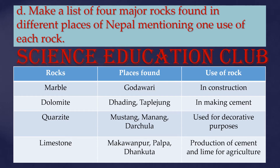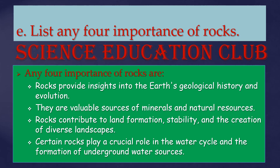Marble is found in Godavari and is used in construction. Dolomite is found in Dading and Taplejung, and is used in making cement. Quartzite is found in Mustang, Manang, and Darchula, and is used for decorative purposes. Limestone is found in Makwanpur, Palpa, and Dhankuta, and is used in production of cement and lime for agriculture.